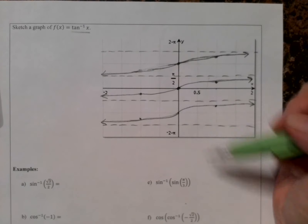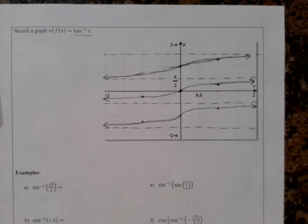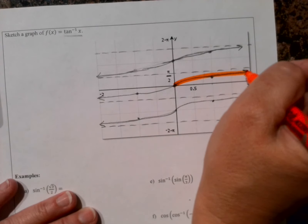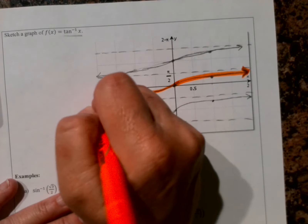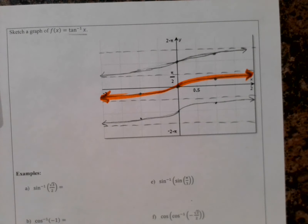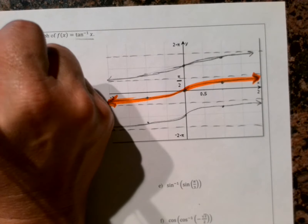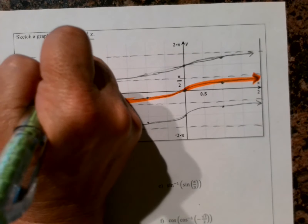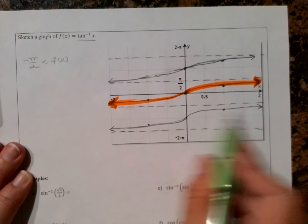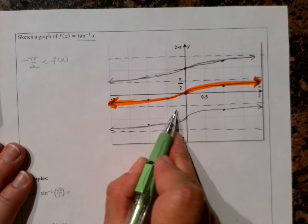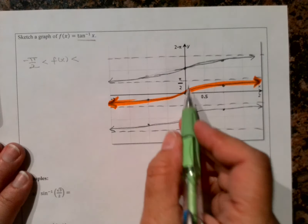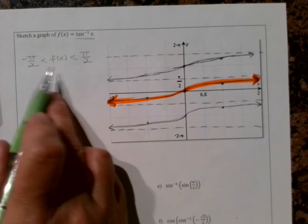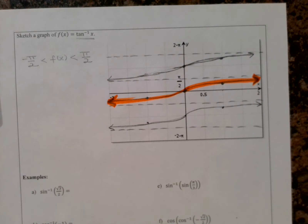This is not a function — we're not passing the vertical line test. We need to restrict the range, and it makes sense to take one piece between the asymptotes, including those first quadrant values. So for inverse tangent, the range is: negative π/2 < f(x) < π/2. Notice I'm not using less-than-or-equal-to because the outputs never actually equal the asymptote values. For inverse sine and inverse tangent, the range is (-π/2, π/2); for inverse cosine, the range is [0, π].